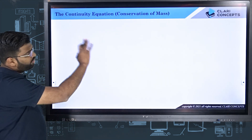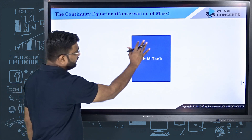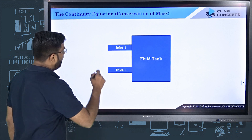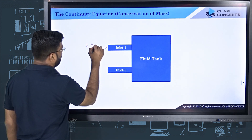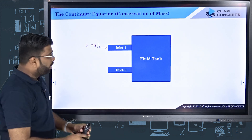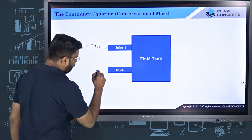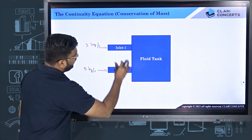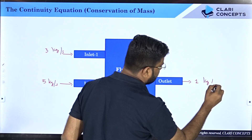Before I move on to the continuity and conservation of mass equation, I would like to ask you one question. Let us say that you have a fluid tank. The tank has two inlets — from one inlet, mass is entering at 3 kg per second. From the second inlet, the mass flow rate is 5 kg per second. The tank has one outlet and the fluid is coming out at a rate of 1 kg per second.